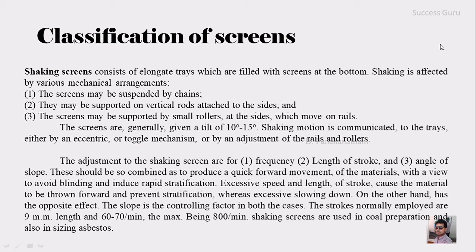The screens are generally given a tilt of about 10 to 50 degrees. The shaking motion is communicated to the tray either by the eccentric or the toggle mechanism, or by adjustment of the rails and rollers. The adjustments of the shaking screen are for safe frequency, length of stroke, and angle of slope, which should be combined to produce a quick forward movement of the material with a view to avoiding blinding and inducing rapid stratification.